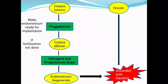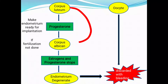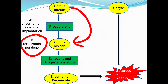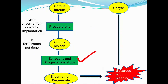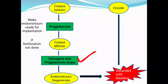The egg waits for about 24 to 48 hours for fertilization. If fertilization does not take place in that duration, the corpus luteum inside the ovary converts into corpus albicans. Once corpus albicans is formed, estrogen and progesterone stop working. Since these hormones are responsible for endometrium production and maintenance, their absence causes the endometrium to start degenerating.